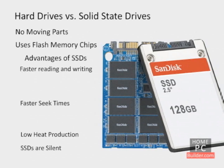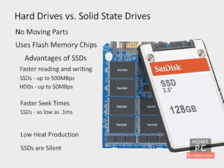The latest SSDs can read and write data at around 500MB per second, while hard drives struggle to get to 50MB per second. Seek time is the time in milliseconds a drive takes to get to the next piece of data. SSDs can have seek times as low as 0.1ms, while hard drives typically have 10ms seek times.